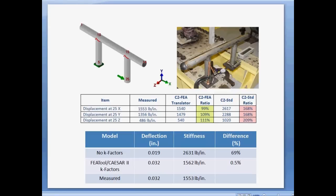This was due to the additional flexibility. The FEATools CESAR2 system stiffness was found to be 1,562 pounds per inch. The measured system stiffness was 1,553 pounds per inch. When FEATools was used with CESAR2, the deflection difference error dropped from 69 percent to 0.5 percent.